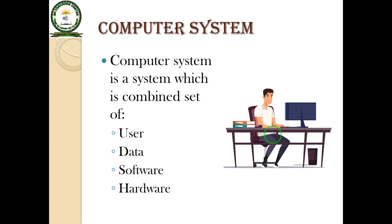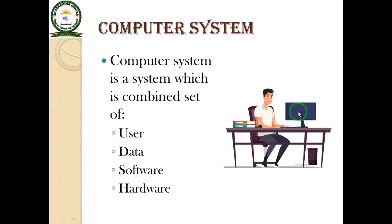Computer system. A computer system is a system which is a combined set of user, data, software, and hardware. These are the four components of the computer system. In this diagram, these four components are shown: data, user, hardware as the outer part, and software installed inside the hardware. These four components together make the computer system.